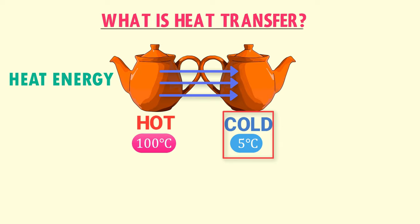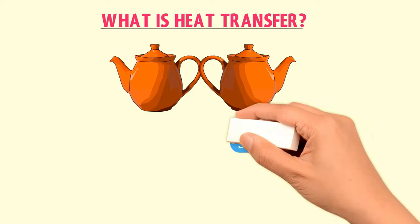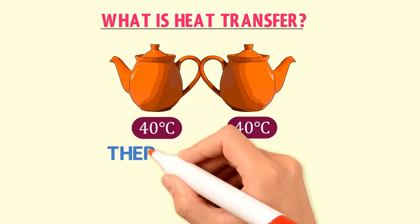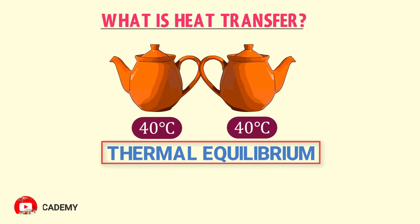Heat or thermal energy from the hot object transfers to the cold object until both bodies reach equal temperature. For example, when heat energy is transferred from the hot object to the cold object, the temperature of the hot object drops to 40 degrees centigrade and the temperature of the cold object rises to 40 degrees centigrade. This state is known as thermal equilibrium.